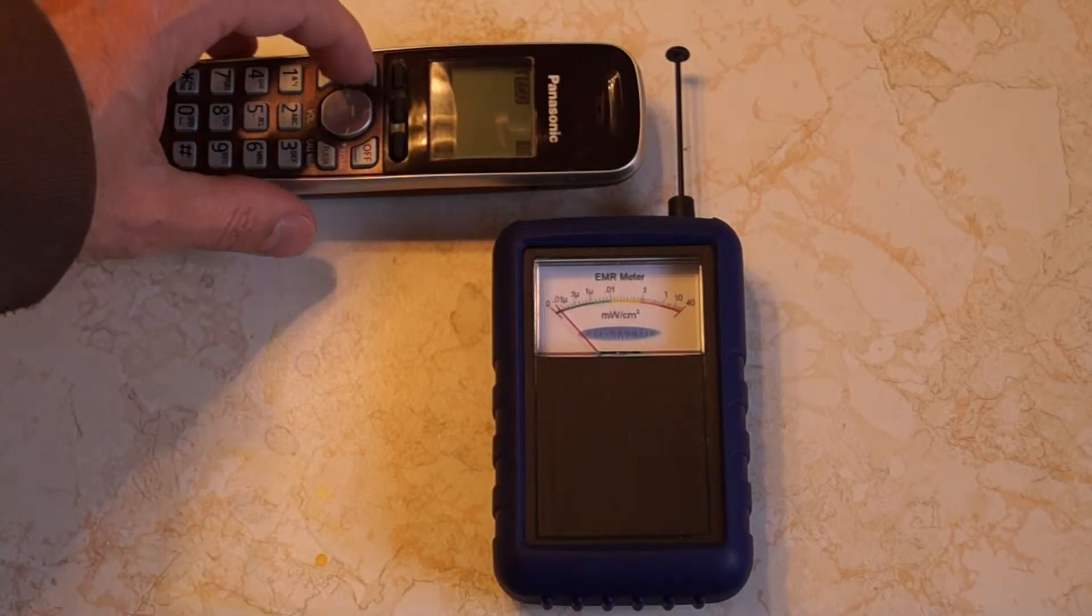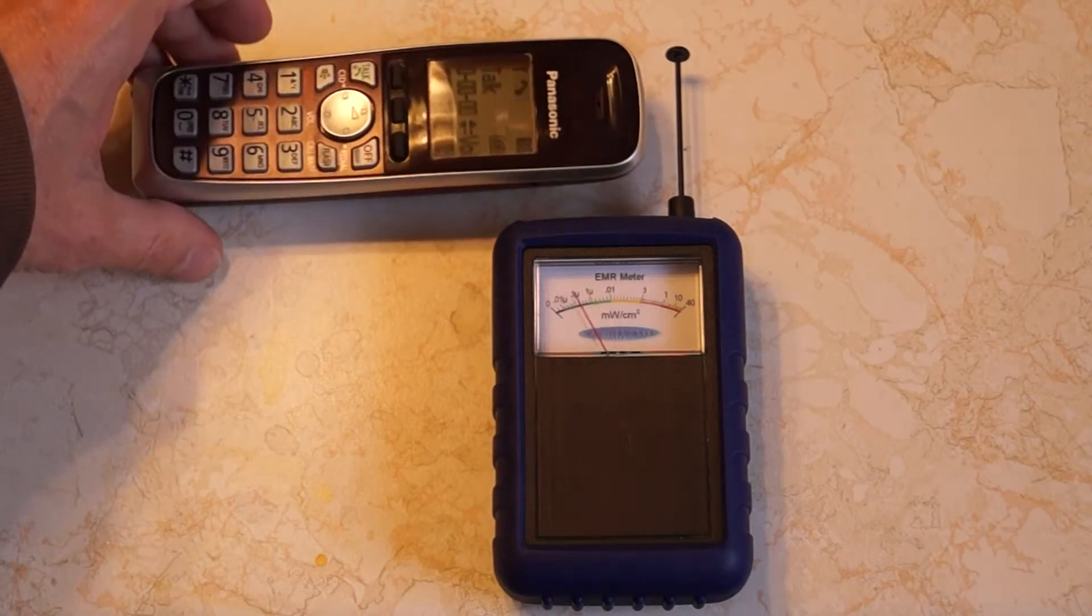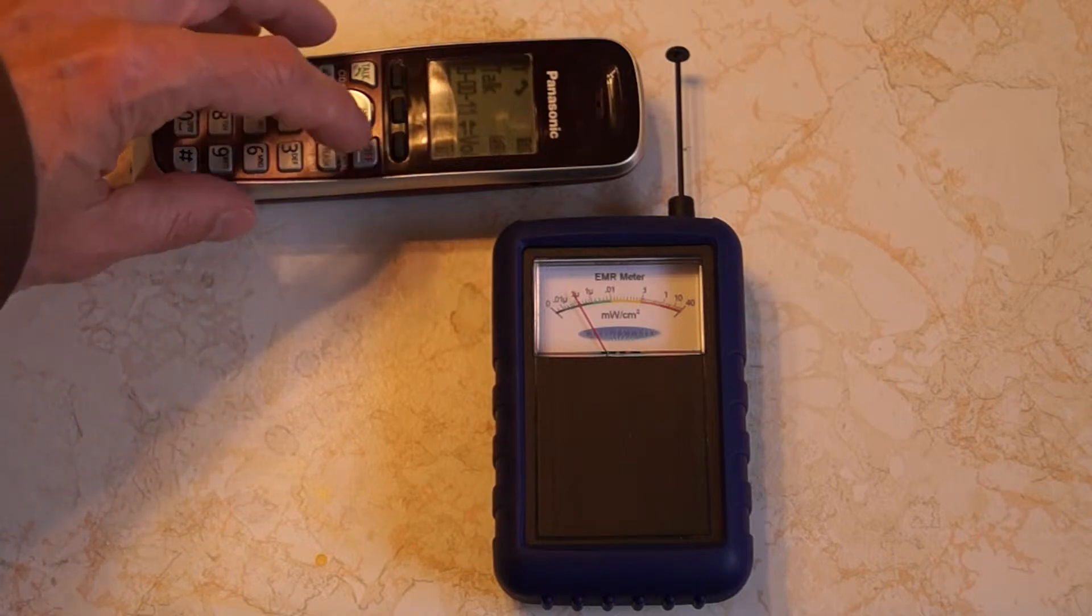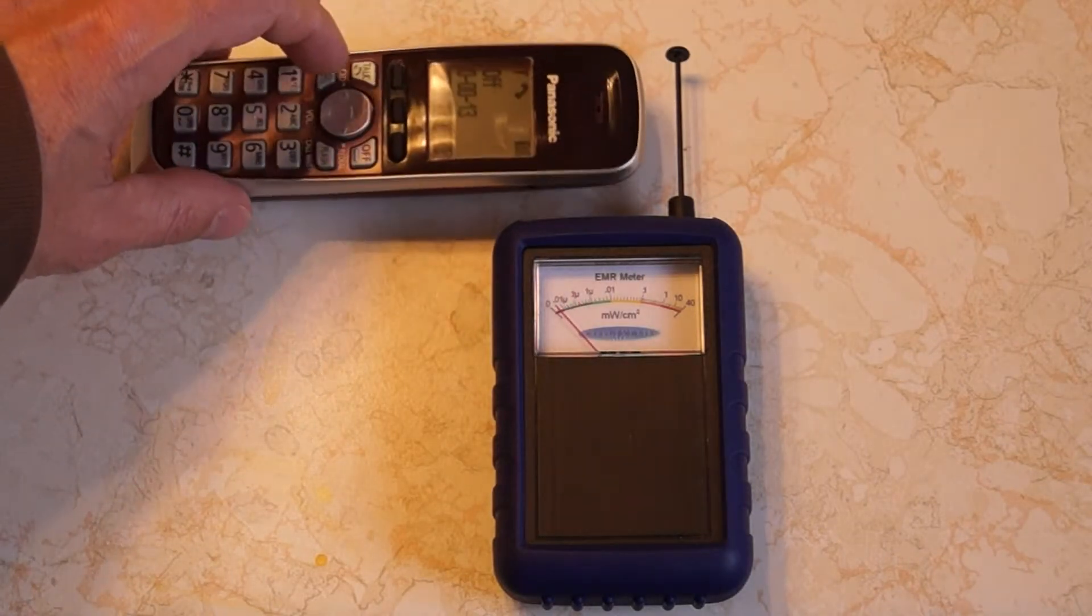And now we're going to turn it on and have it communicate with the base station. And you can see it goes almost into the yellow. It's about 0.005 milliwatts per square centimeter when it first communicates. I'll show that again.